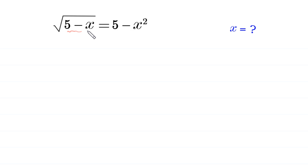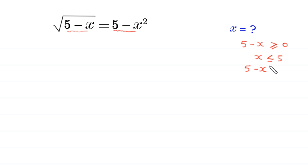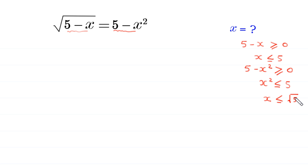Since the expression 5 minus x is under a square root, 5 minus x must be greater than or equal to 0, which means x must be less than or equal to 5. Also, 5 minus x squared must be greater than or equal to 0, which means x squared must be less than or equal to 5. This implies x must be less than or equal to root 5, and x must be greater than or equal to negative root 5.